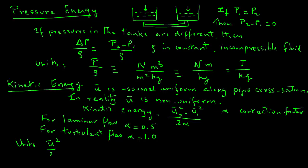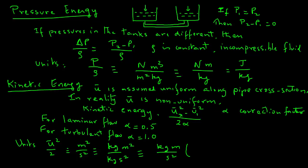In terms of units, kinetic energy is u squared over 2. Velocity has units of meters per second, so this gives meters squared per second squared. Multiplying numerator and denominator by kilograms gives kilogram-meter squared divided by kilogram-second squared. We can rearrange: kilogram-meter divided by second squared — which is force in newtons — times meter per kilogram. Newtons times meter equals joules, so the kinetic energy term also has units of joules per kilogram.